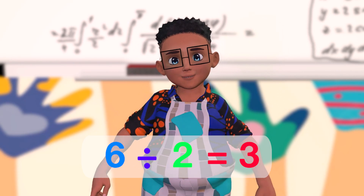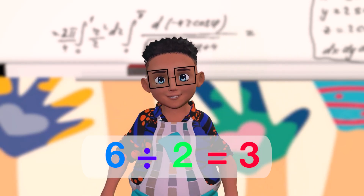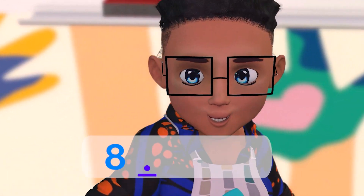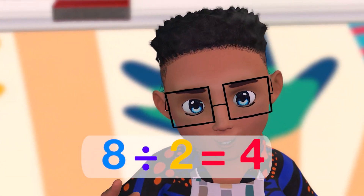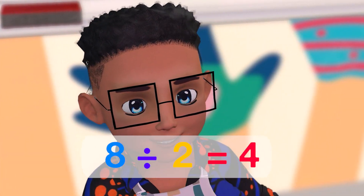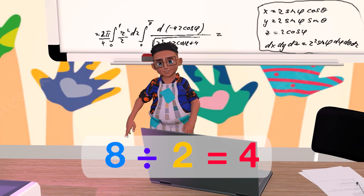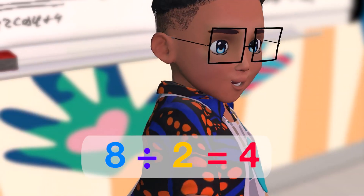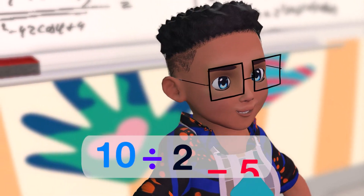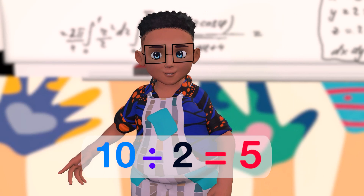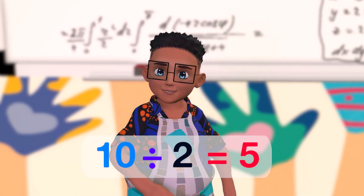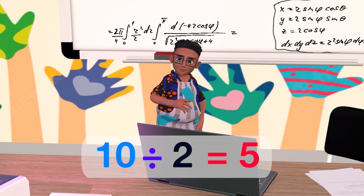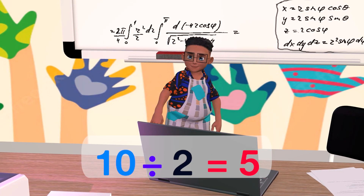6 divided by 2 is 3. 8 over 2 is 4. 8 divided by 2 is 4. 10 over 2 is 5. 10 divided by 2 is 5.